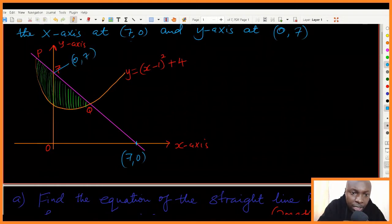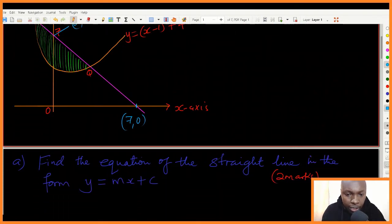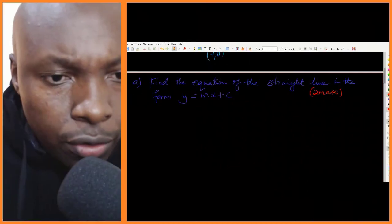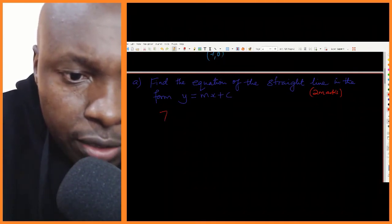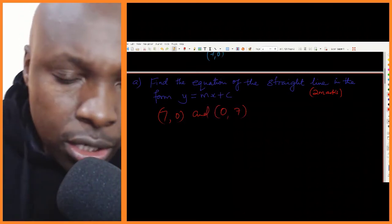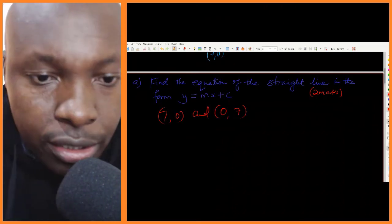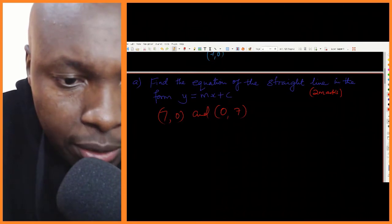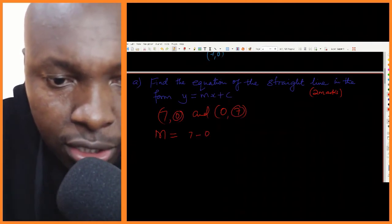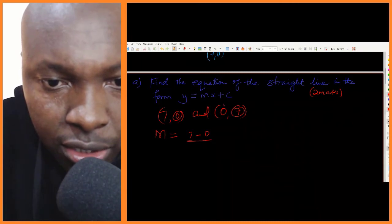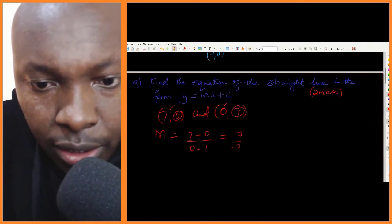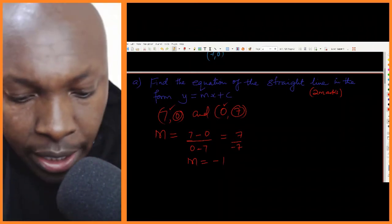Those are the two points on that line, so we can use those two points to get the equation of the straight line. The first thing is to get the gradient. Gradient is given by change in y over change in x, which is seven subtract zero over zero subtract seven, giving seven divided by negative seven. Therefore the gradient is negative one.